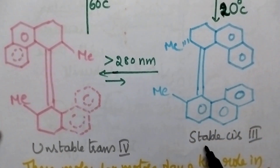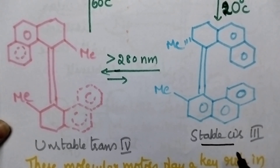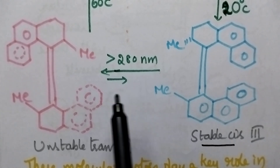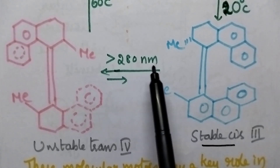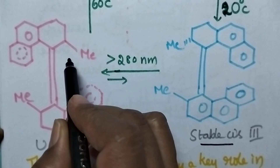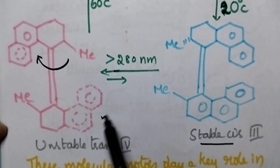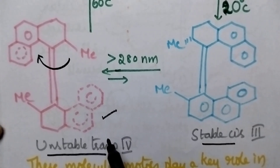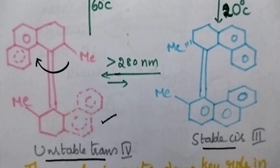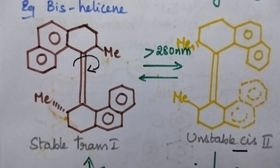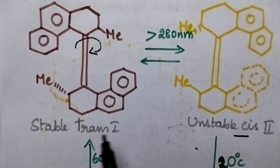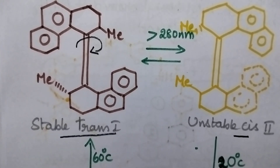Whenever 20 degrees temperature is maintained, it results in the formation of the stable cis configuration. Again, when this cis bishelysine is exposed to light radiation having a wavelength greater than 280 nanometers, rotation around the double bond occurs, forming the unstable trans configuration. At 60 degrees centigrade, it returns to the stable trans configuration.